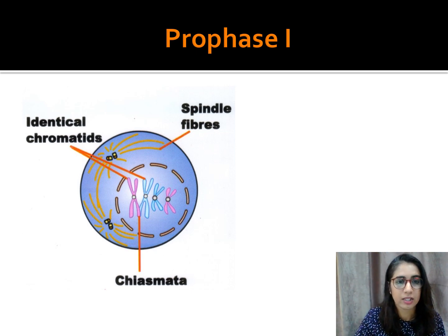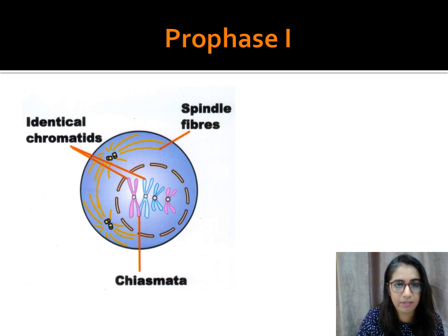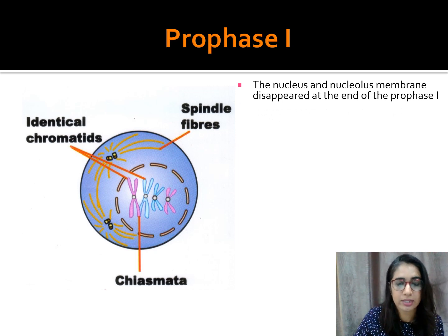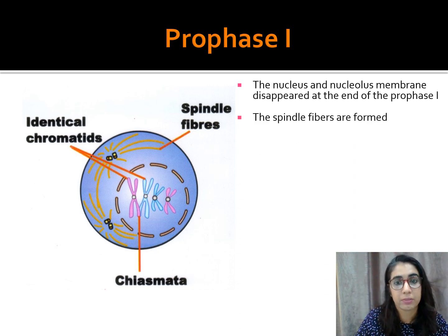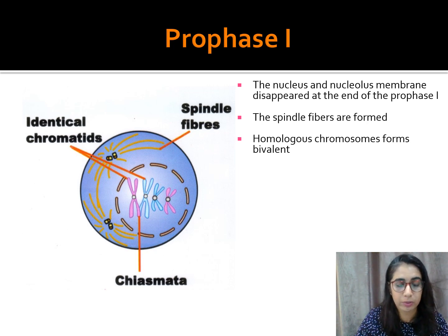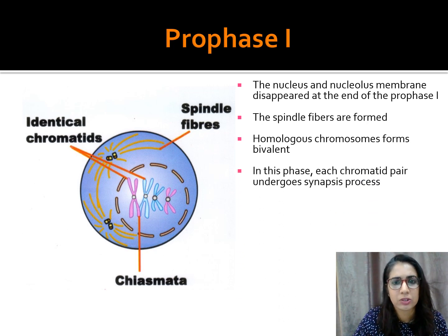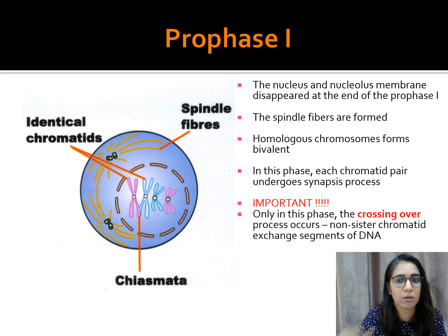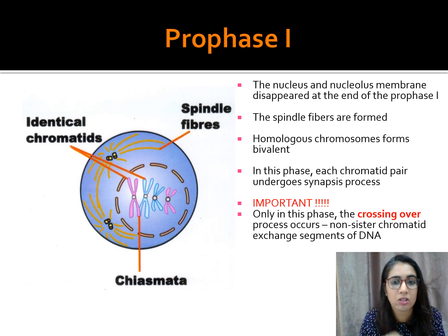In prophase 1, spindle fibers start to form and identical chromatids are present, along with chiasmata. The nucleolus and nuclear membrane disappear by the end of prophase 1. Homologous chromosomes form a bivalent. Each chromatid pair undergoes synapsis. Importantly, crossing over only occurs in prophase 1, where non-sister chromatids exchange segments of DNA.